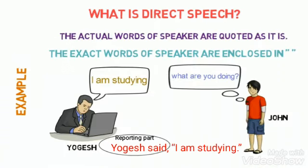What is direct speech? The actual words of the speaker are quoted as they are. The exact words of the speaker are enclosed within double quotation marks. For example, 'What are you doing?' 'I am studying.' Direct speech happens when a person asks the question and another person replies.